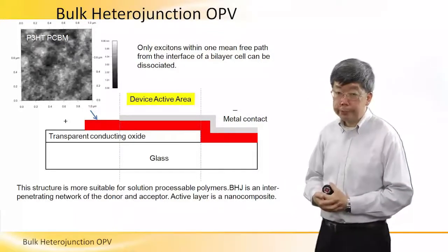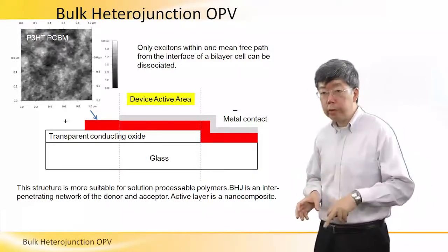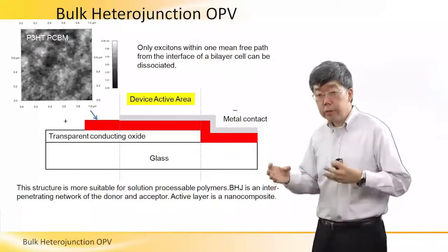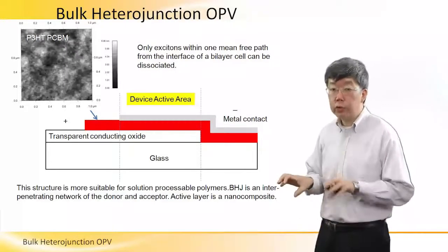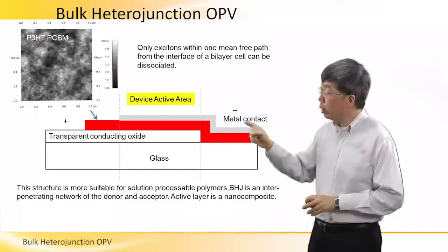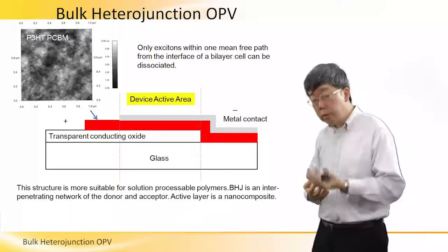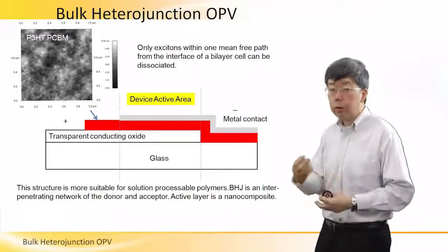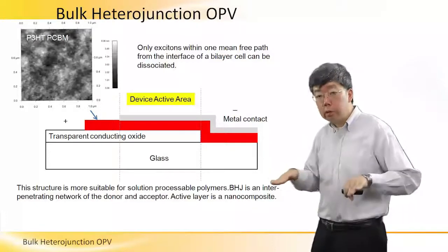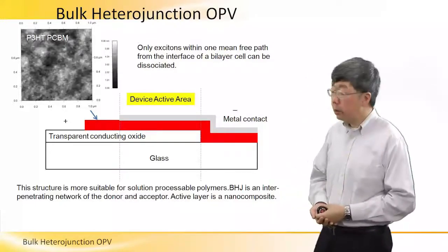This bulk heterojunction OPV structure is more suited for solution-processed polymers. In other words, we can dissolve the polymer donor material and the acceptor material as solutions. Then we mix the two solutions together and deposit the mixed solution in one step as the active layer.